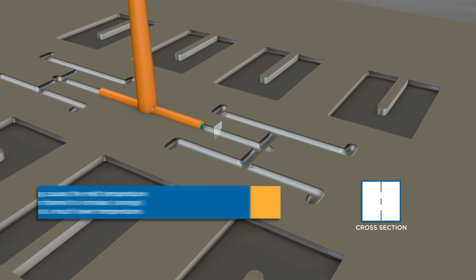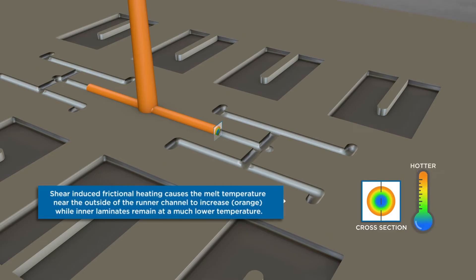Shear induced or frictional heating causes the melt temperature near the outside of the runner channel to increase, seen here in orange, while the inner laminates remain at a much lower temperature.